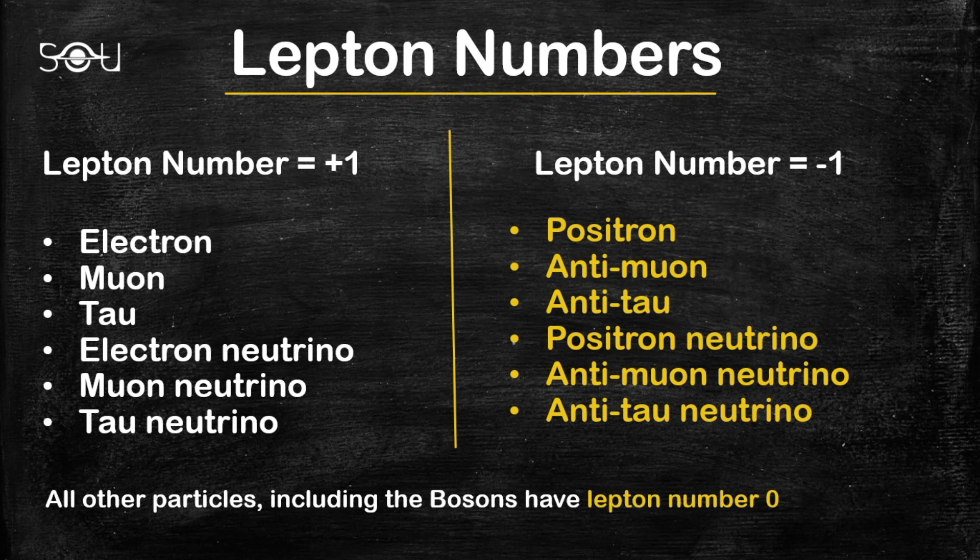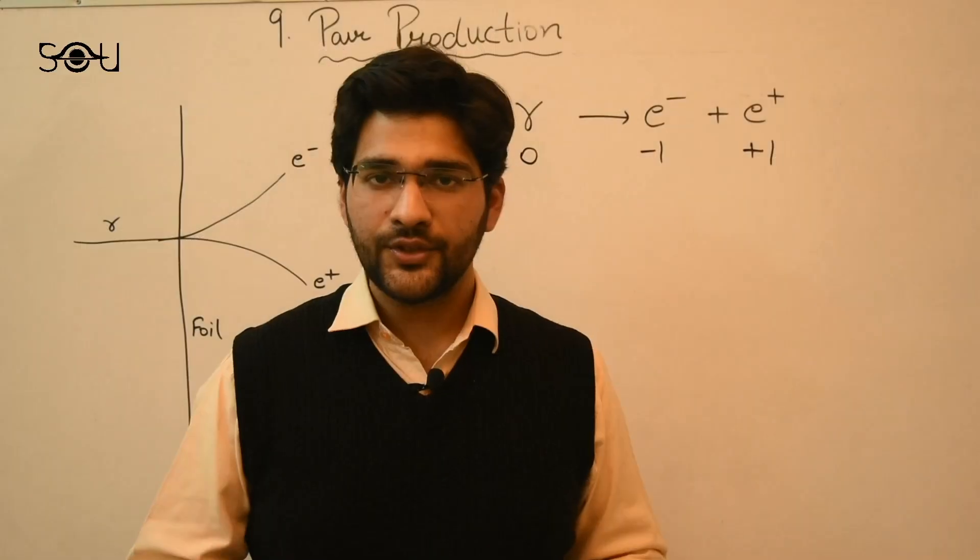Each of these leptons is assigned a lepton number equal to one, and the lepton number given to their antimatter counterparts is minus one. So in this case, even the lepton number is conserved.